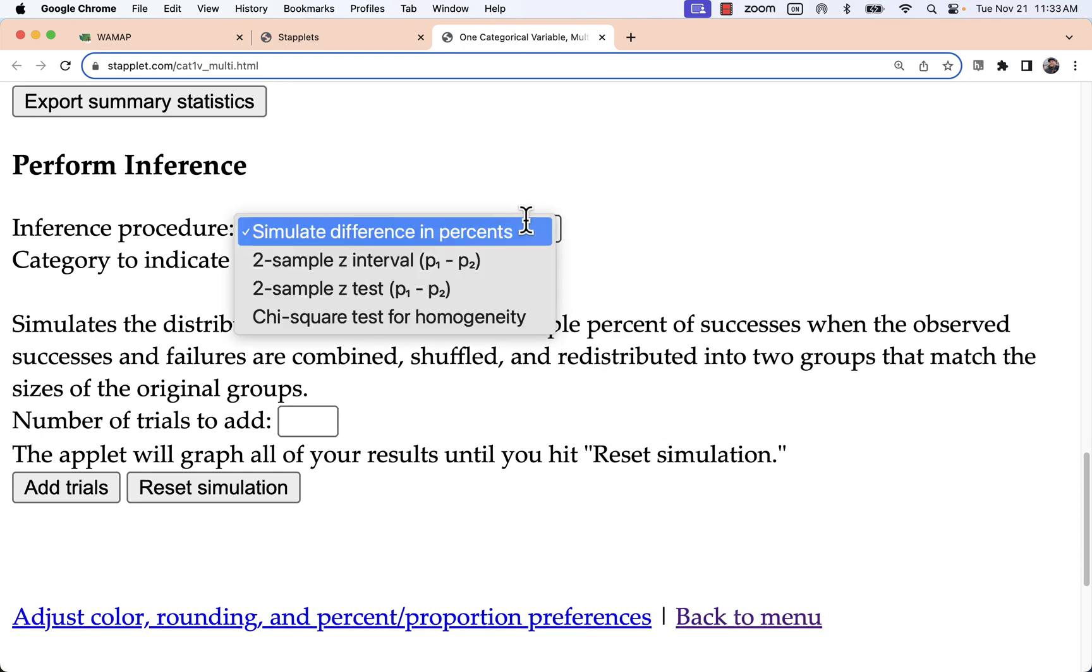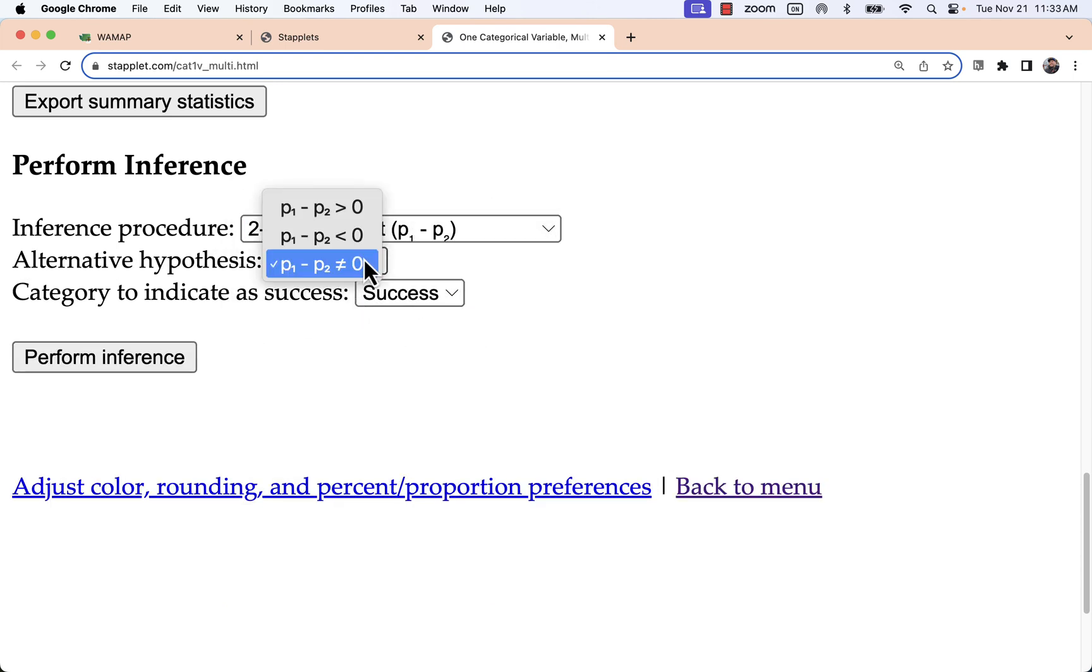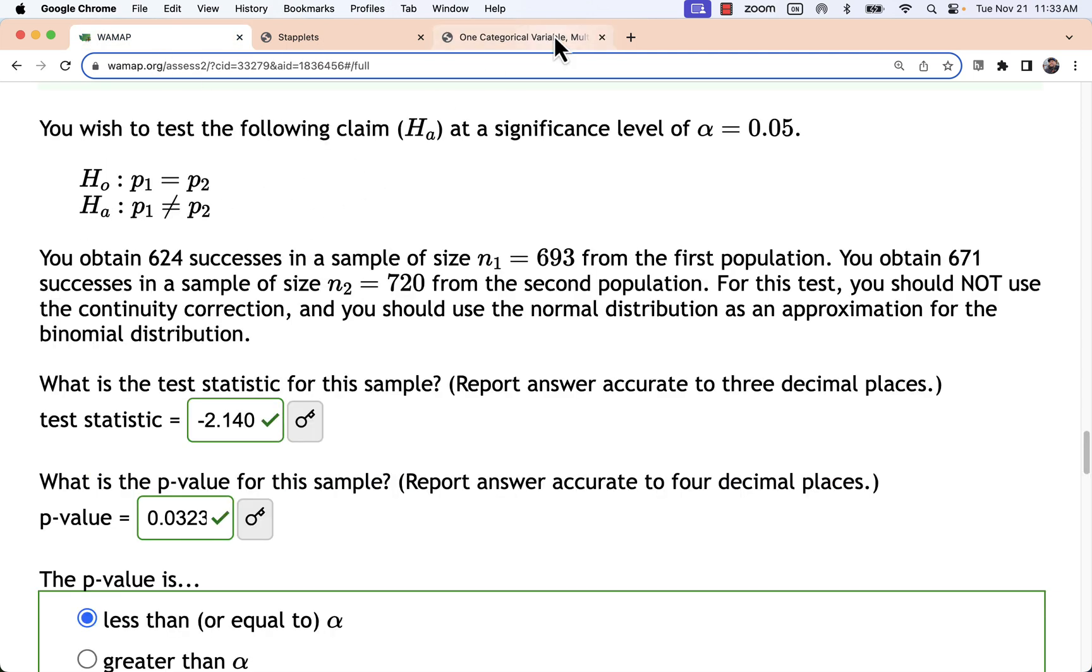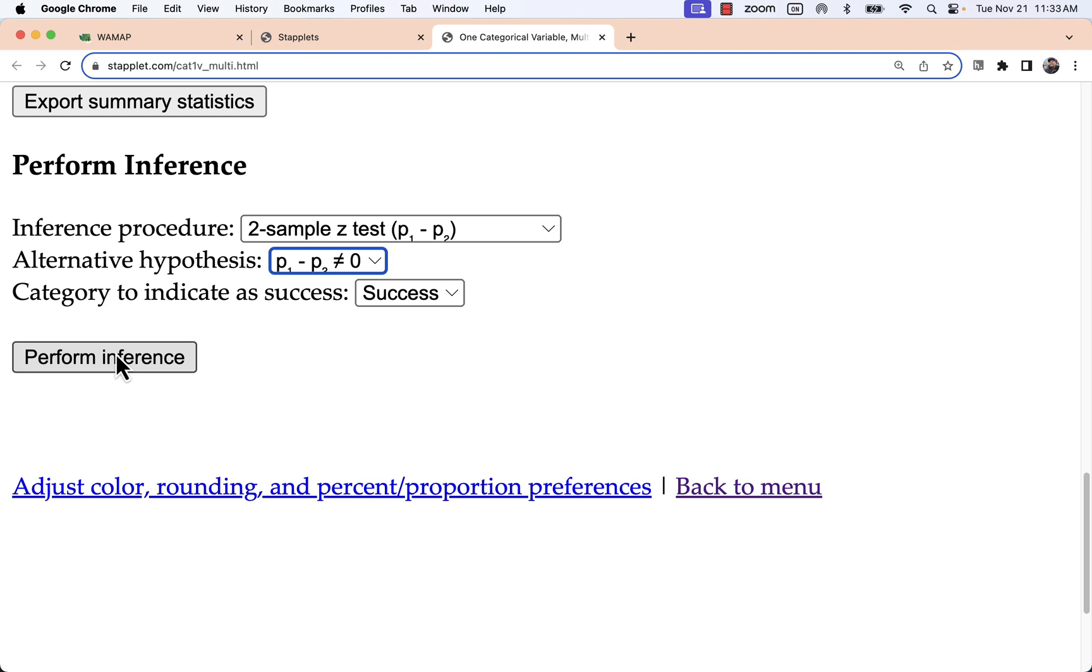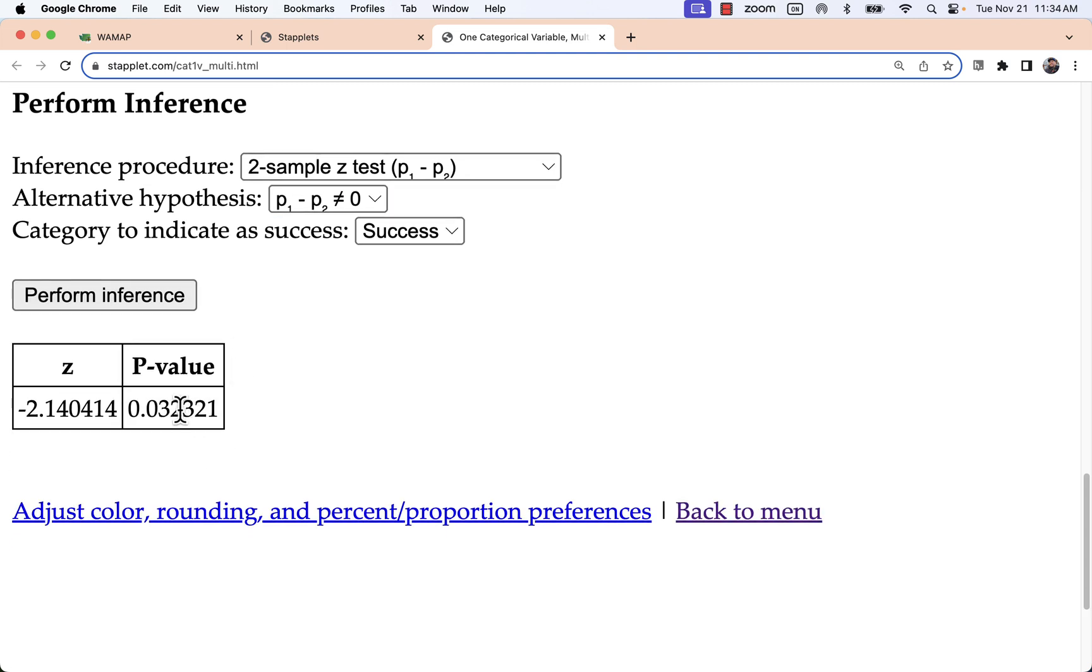Now at the bottom we can perform inference. We'll do a two sample z test. I had a not equal sign for my alternative hypothesis. That makes it a two tail test. So that's going to have double the p value as if it were say a left tail test. So we're doubling the p value. It will mean that we reject the null hypothesis less often.